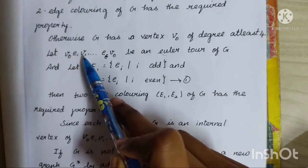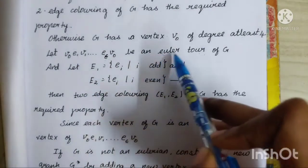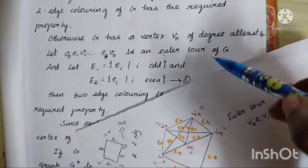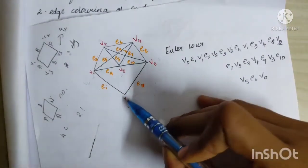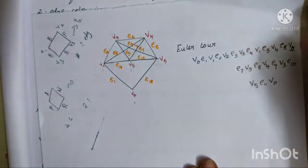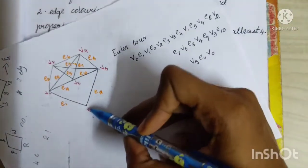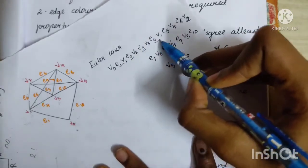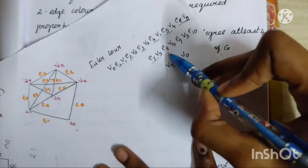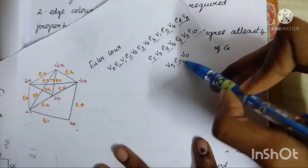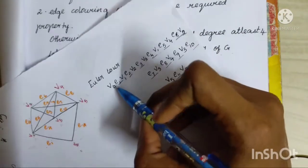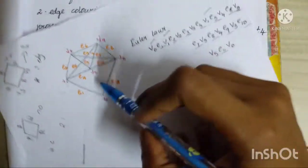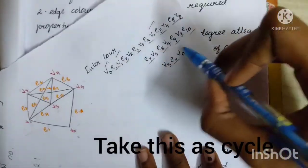Let V0, E1, V1, ... be an Eulerian circuit starting and ending at V0. In this Eulerian circuit, each edge is traversed exactly one time — E1, E2, E3, E4, E5, E6, E7, E8, E9, E10, E11. The edges do not repeat, but the vertices may repeat.